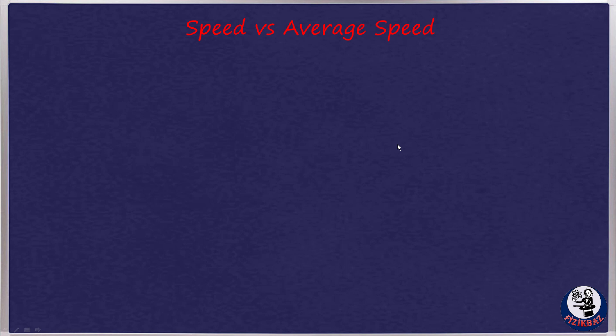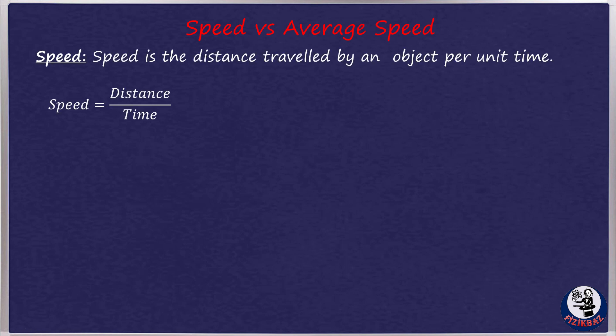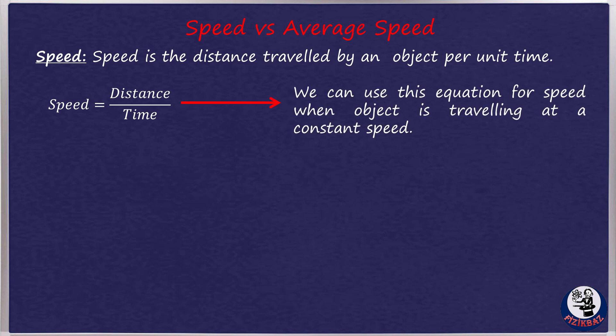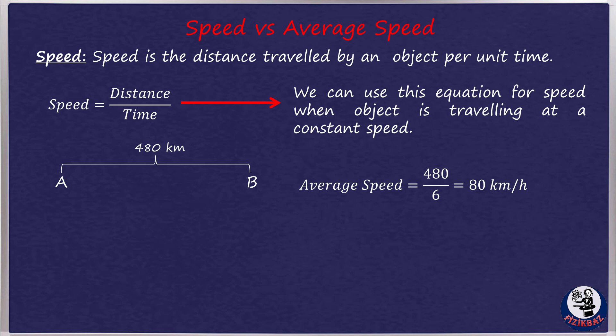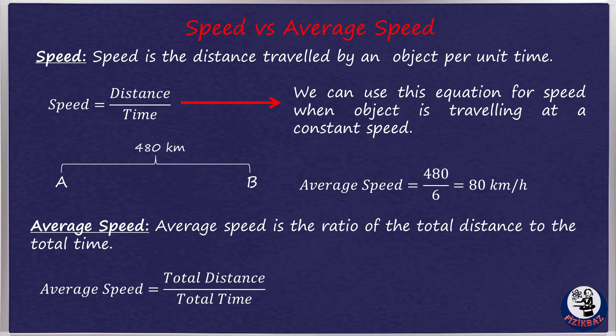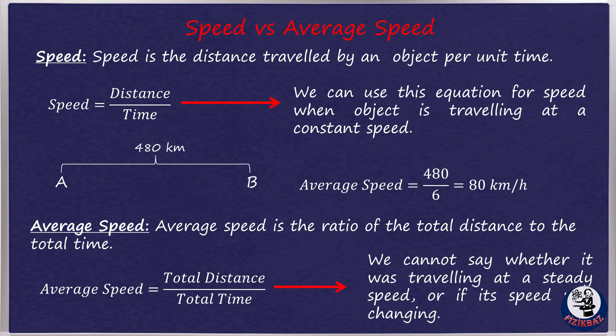We will start with the definitions and the comparison of speed and average speed. Speed is the distance traveled by an object per unit time, but we can use this equation for speed only when the object is traveling at a constant speed. If a car travels 480 kilometers from A to B in 6 hours, its average speed is 480 divided by 6, which equals 80 kilometers per hour. The speedometer will certainly not read 80 kilometers per hour for the whole journey, but might vary considerably from this value. This is why we state the average speed. It's always true that average speed is the ratio of the total distance to the total time. To find the actual speed at any instant, we need to know the distance moved in a very short interval of time.